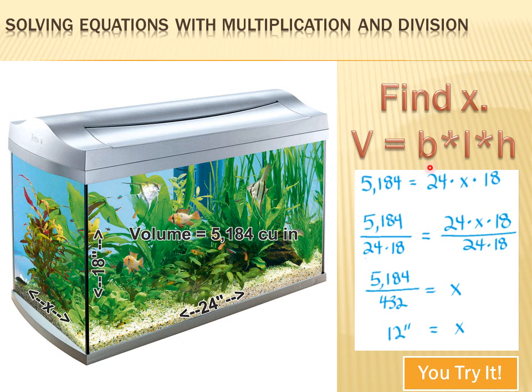Now, I need to get rid of a 24, and I need to get rid of an 18, and they're both multiplications. So I'll divide the right side of the equation by 24 times 18. And I need to do the same to the left side of the equation. On the right, my 24s cancel each other out, my 18s cancel each other out, and leave just x. And on the left, I simplify that to 5,184 divided by 432. And after I do that division, I discover that x equals 12 inches.